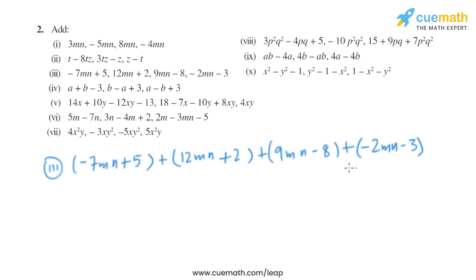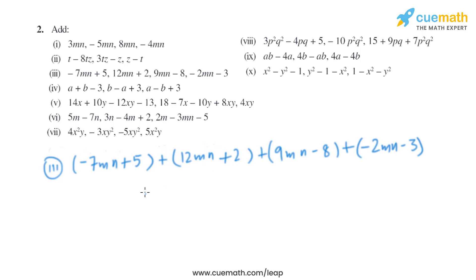The terms with mn are like terms and the constant terms are like terms. So minus 7mn plus 12mn gives us 5mn; 5mn plus 9mn gives us 14mn; and subtracting 2mn gives us 12mn.